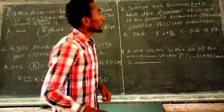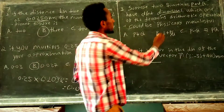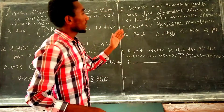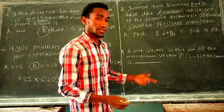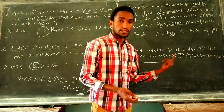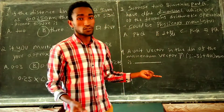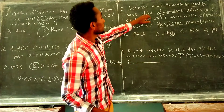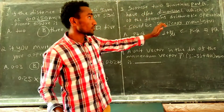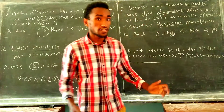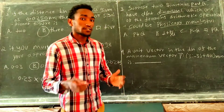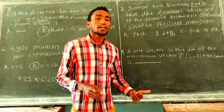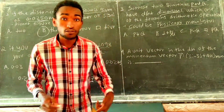Suppose two quantities P and Q have different dimensions — which one of the following arithmetic operations could be physically meaningful? The dimension is given by the fundamental physical quantity, and you can find distinct dimensions under the same operation.